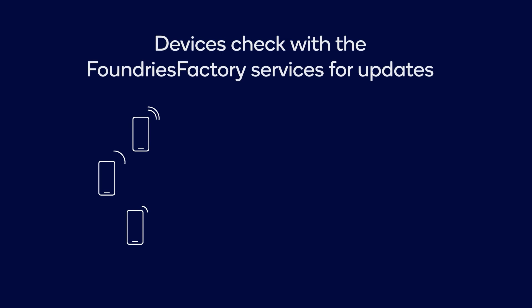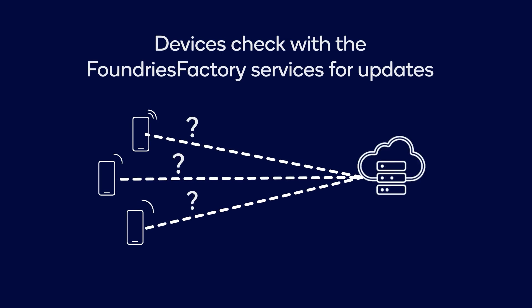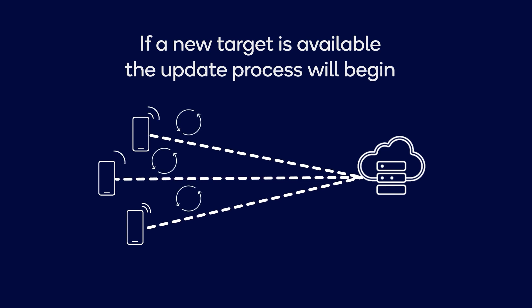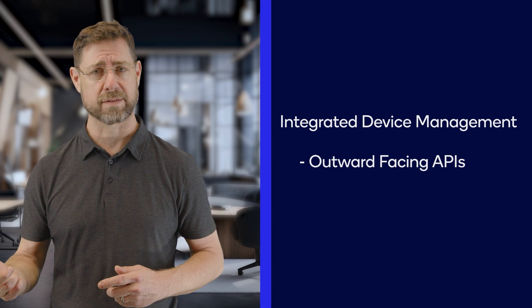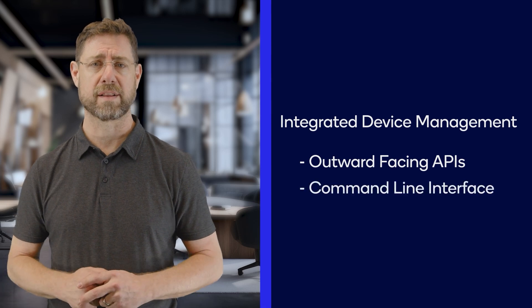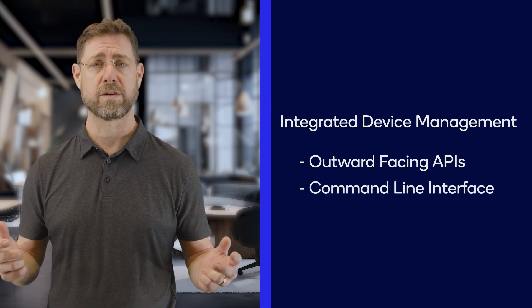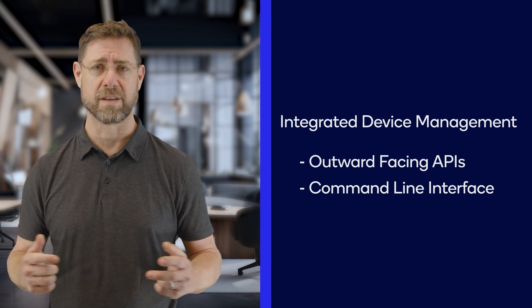One of the key features of the Foundries Factory solution is its capability for device management and configuration. Devices check in with the Foundries Factory services and ask for the latest target that they should be running. If there's a new target available, the update process will begin. If desired, developers can also customize much of the update process. To integrate with our device management services, we provide outward-facing APIs and a simple command-line interface, or CLI, to use those services to operate your devices in the field.